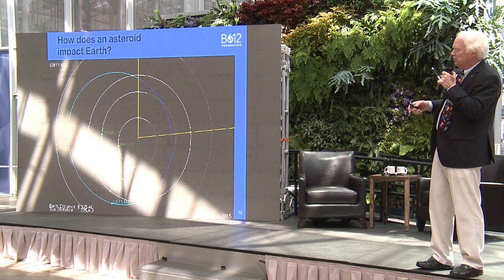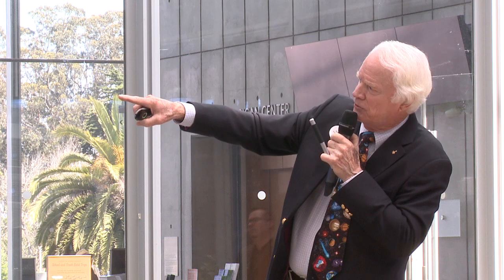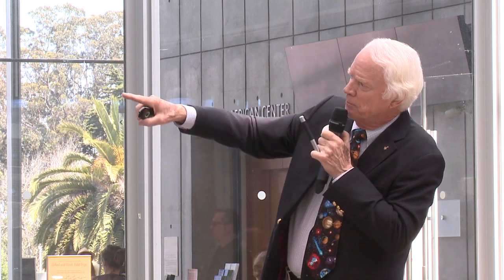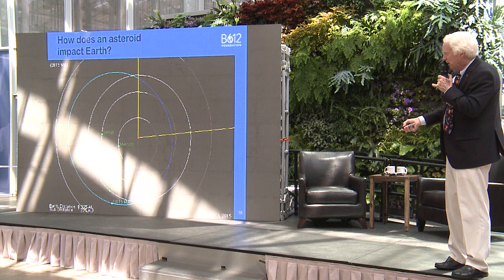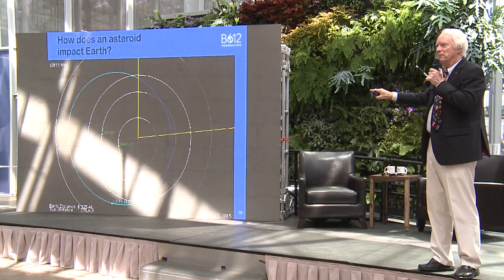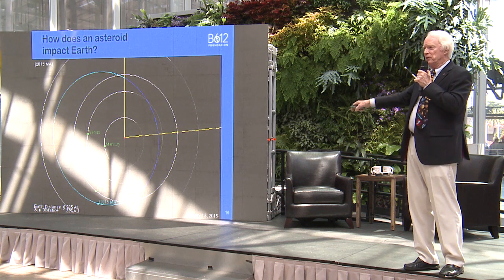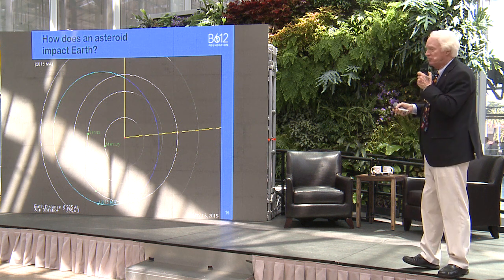So how does an asteroid impact the Earth? The circular tracks are Mercury nearest the sun, then Venus and Earth, with Mars on the outer circle. You can see the blue ellipse that crosses the Earth's orbit in two different places — it's a three-dimensional crossing. The Earth goes through that intersection once a year. The asteroid goes around and the question is: when the Earth is in the intersection — which is only about eight minutes every year — does the asteroid come through at the same time? If it does, that's an impact. What we need to do is either speed them up or slow them down so they miss that eight-minute period. That's how you deflect an asteroid.